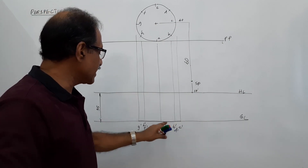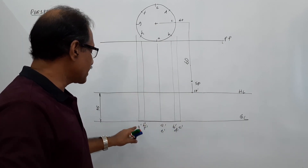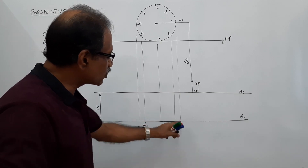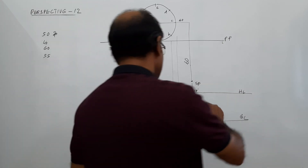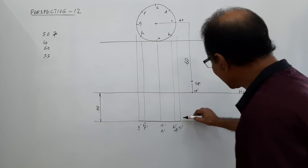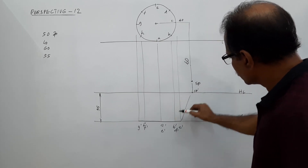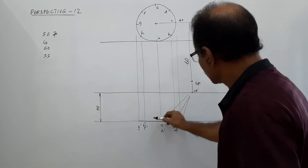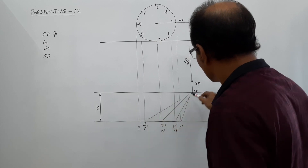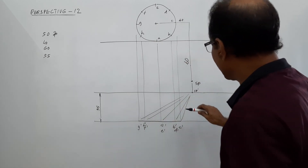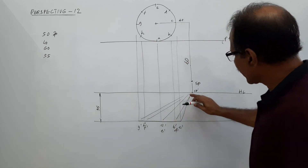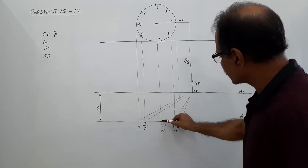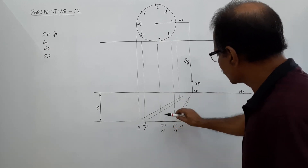Label the elevation points A dash, B dash, C dash, D dash, E dash, F dash, G dash, H dash. Join all points of the elevation of the lamina to SP dash using very light lines.